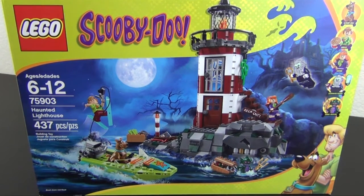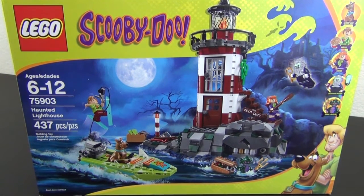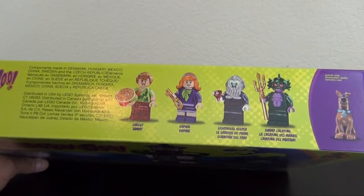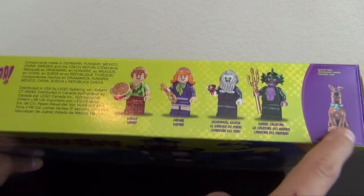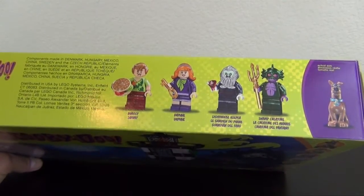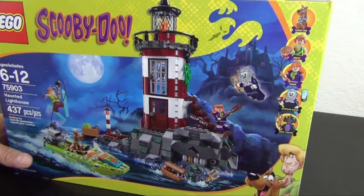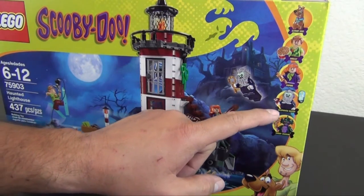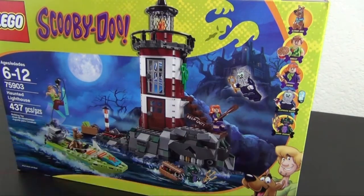Hey everyone, welcome back to the Hidden Brick where today we're doing part one of the build of the LEGO Scooby-Doo Haunted Lighthouse set. This is set number 75903, 437 pieces. Looks like we get four minifigures and Scooby, who's considered a minifigure: Scooby, Shaggy, Daphne, lighthouse keeper, and the swamp creature.